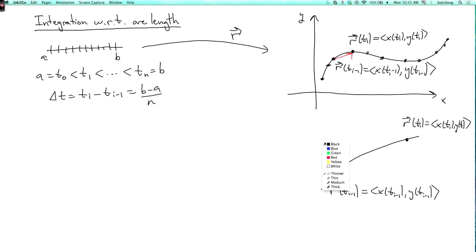And here we have this vector which tells us how much we're going between these two points. Let's call this vector delta xi comma delta yi.